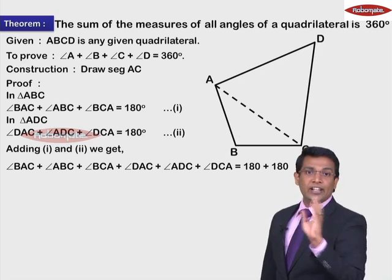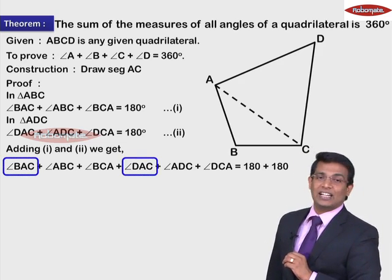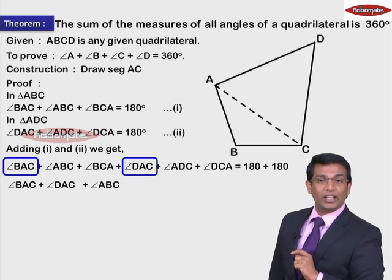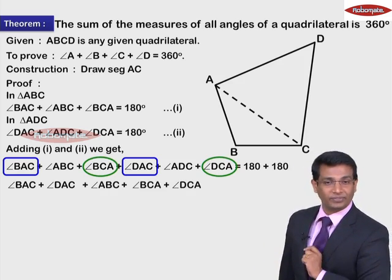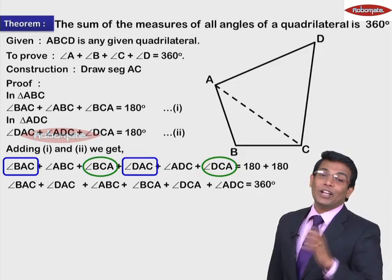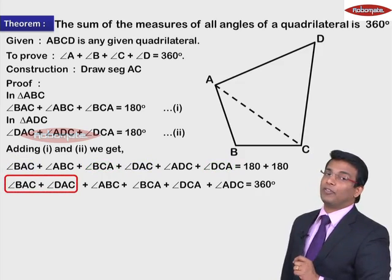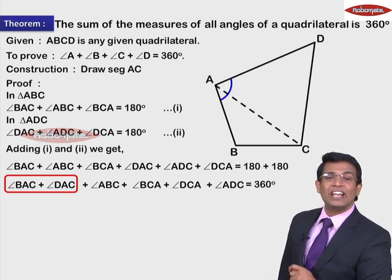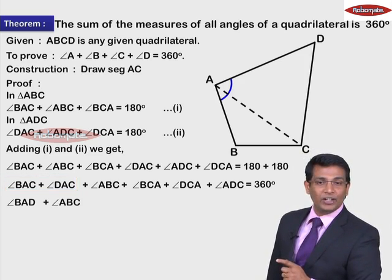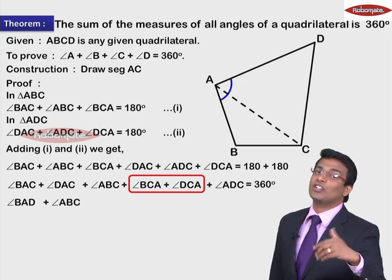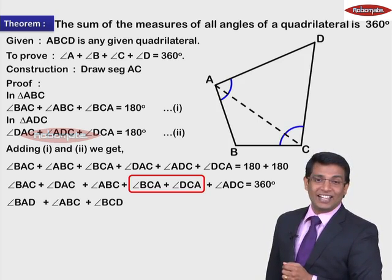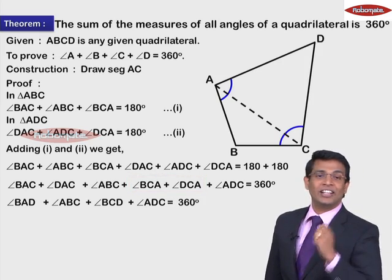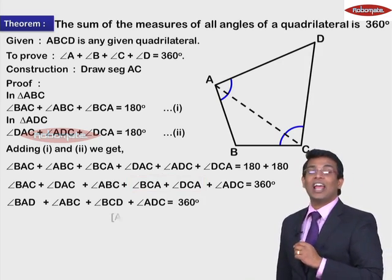Now let's arrange the terms. Angle BAC and angle DAC can be taken together, angle ABC remains as is, and angle BCA + angle DCA are taken together. So we get: (angle BAC + angle DAC) + angle ABC + (angle BCA + angle DCA) = 360 degrees. Observing the figure, angle BAC + angle DAC together give angle BAD, and angle BCA + angle DCA together give angle BCD. The reason for combining these is the angle addition property.